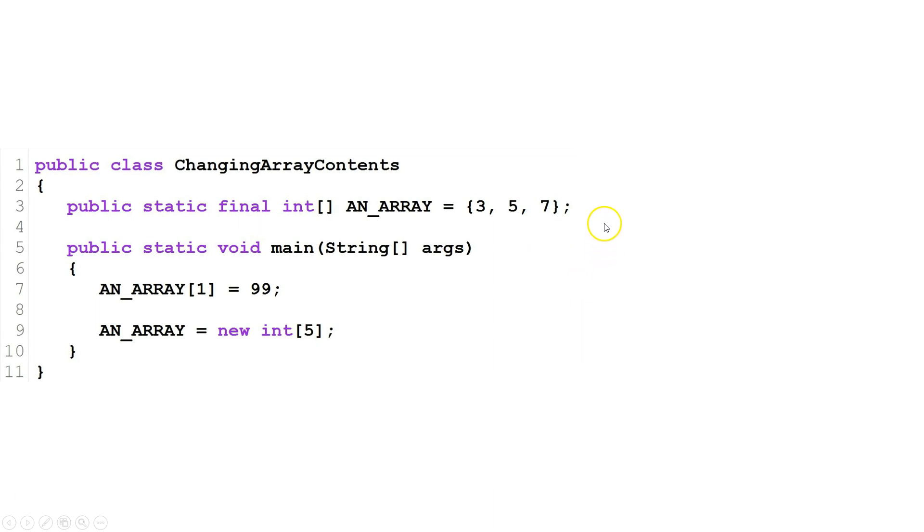Let's look at this example here. We have an integer array declared final, it is a class variable, and it's been initialized with the values 3, 5, and 7.